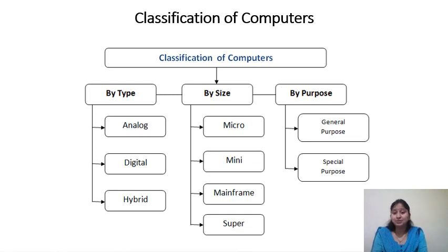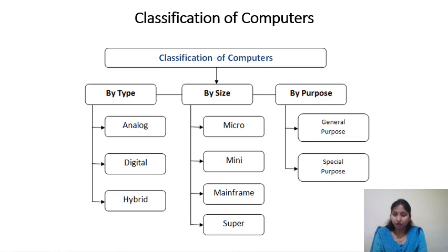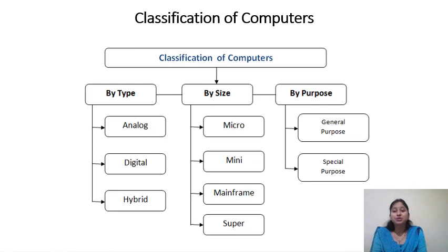On the basis of physical size of the computer, we have four categories: microcomputers, mini computers, mainframe computers, and supercomputers. On the basis of purpose, we have general purpose and special purpose computers.